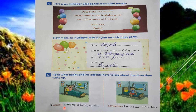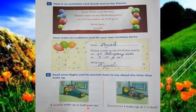Sometimes I wake up at 7 o'clock — 'sometimes' means कभी कभी, meaning occasionally I wake up at 7 o'clock. So this is the timing of your wake up. If you want to say when you mostly wake up, we use 'usually.' For example: I usually wake up at half past six — or whatever your timing is, like I usually wake up at six o'clock.